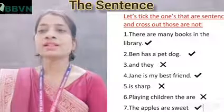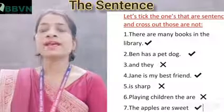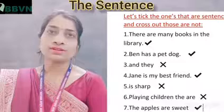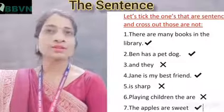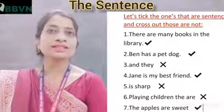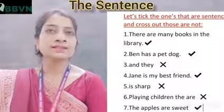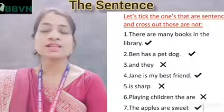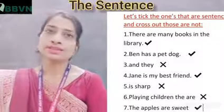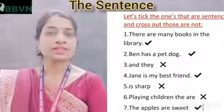Next is: 'Ben has a pet dog.' This is also a sentence — it is making complete sense. So we are going to tick it. It is right.